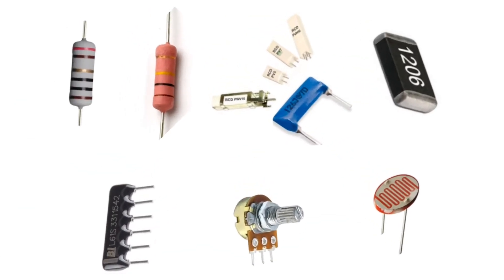A resistor is a passive two-terminal electrical component that implements electrical resistance as a circuit element. In electronic circuits, resistors are used to reduce current flow, adjust signal levels, to divide voltages, bias active elements, and terminate transmission lines, among other uses.